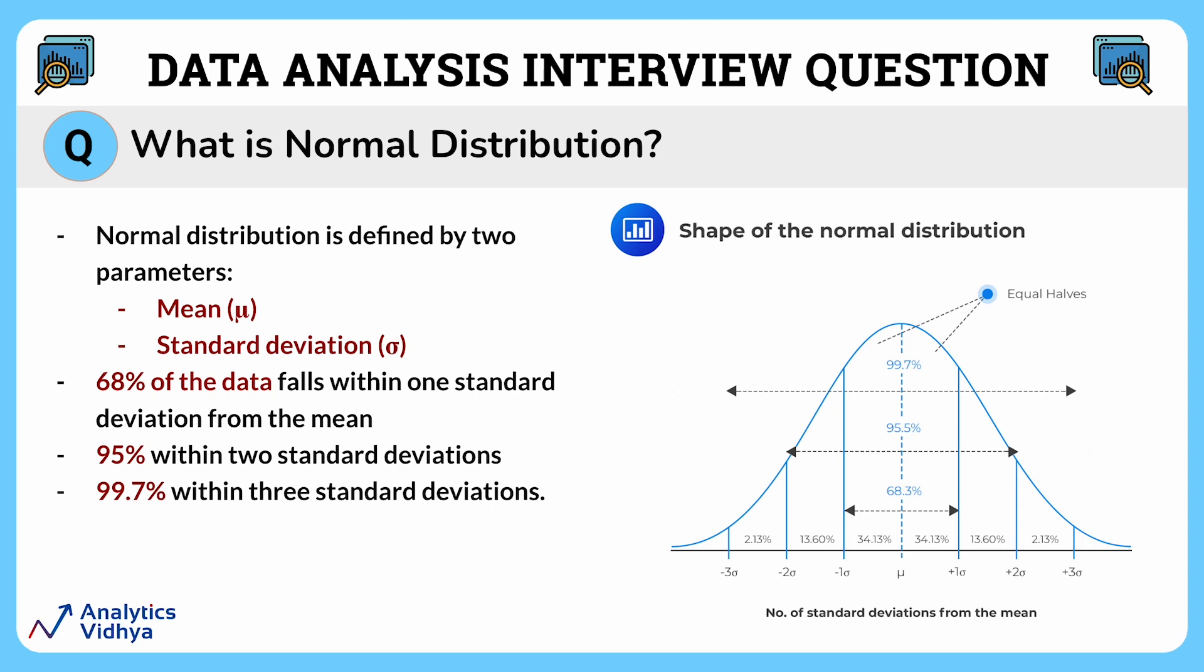Talking about the spread of data, approximately 68 percent of the data falls within one standard deviation from the mean, 95 percent within two standard deviations, and 99.7 percent of the data lies within three standard deviations.